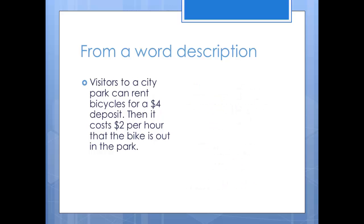The first one is about renting a bike. Visitors to a city park can rent bicycles for a $4 deposit. Then it costs $2 per hour that the bike is out in the park. The domain in this first problem would be the number of hours the bike is rented for. Can you rent a bike for a negative number of hours? No, so the domain starts at zero. How high can it go? Realistically, there would be a limit on how many hours you could rent the bike for, but since the problem doesn't mention that, we'll say the domain can be anything from zero hours and up.